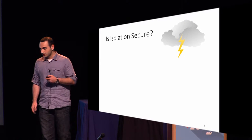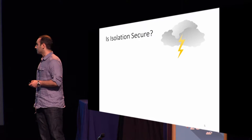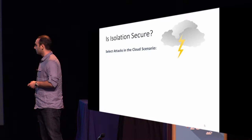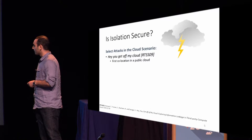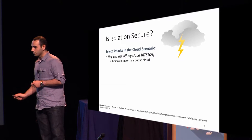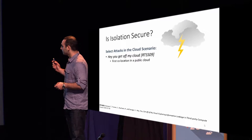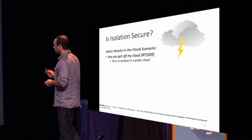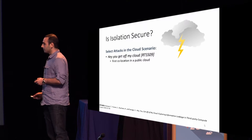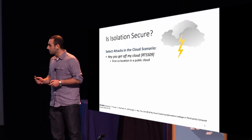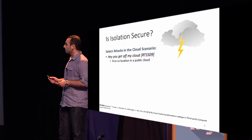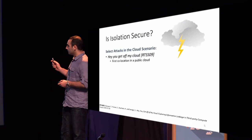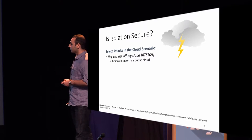According to recent literature, it is not. I'd like to briefly mention three works. The first one, "Hey You, Get Off My Cloud," is a seminal work by Ristenpart et al. performed in 2009. They showed for the first time that it is in fact possible to co-locate with a specific target in a public cloud — in this case, Amazon EC2.